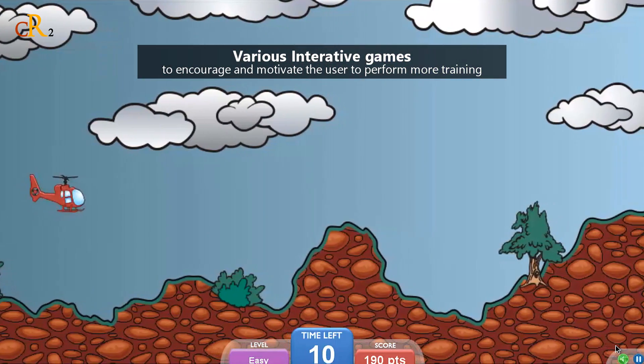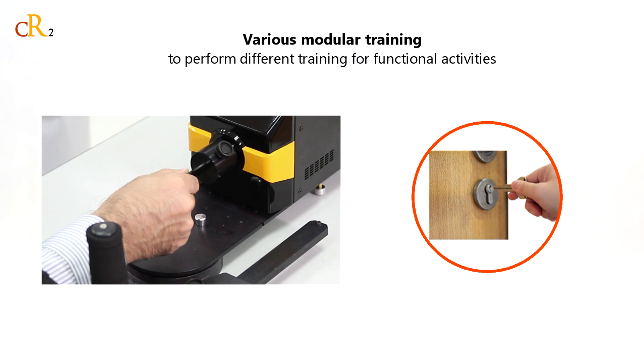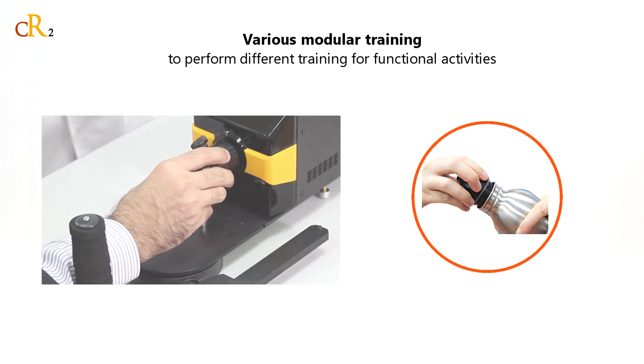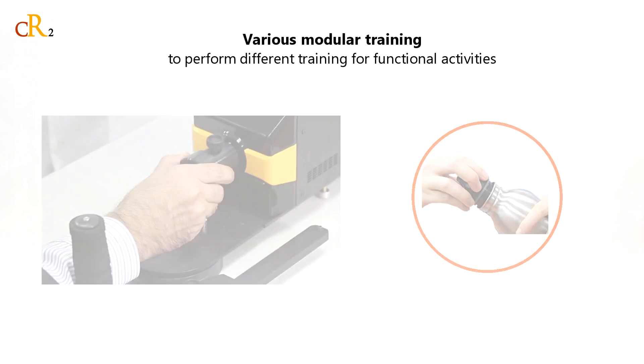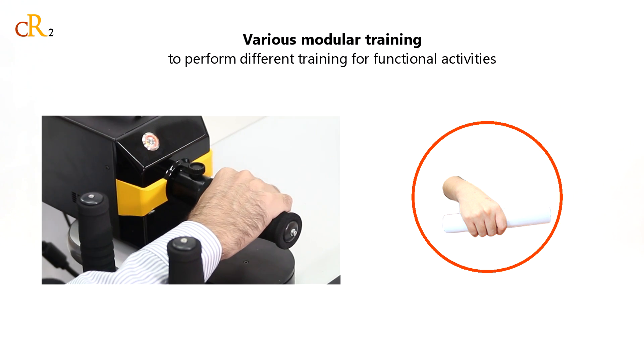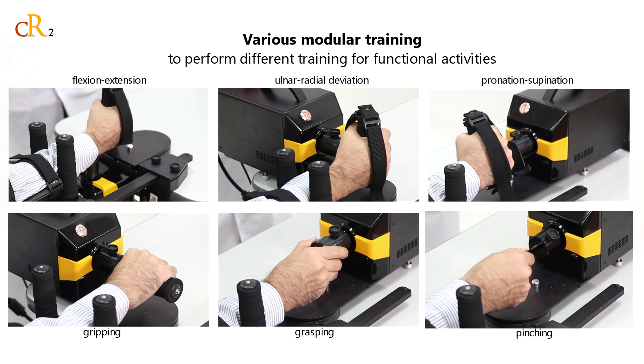The compact design of the robot provides optional modular units that can be used to train for different functional movement in limited space to fit for various users.